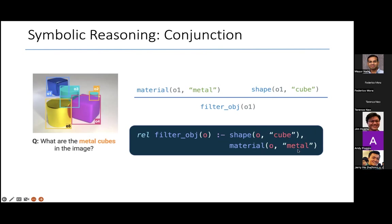Once I have these relational representations, I can write a rule like this, which says get me all the objects in the scene whose shape is a cube and whose material is metal. Those of you familiar with Horn clauses will understand what this rule is saying. You typically read it from right to left.